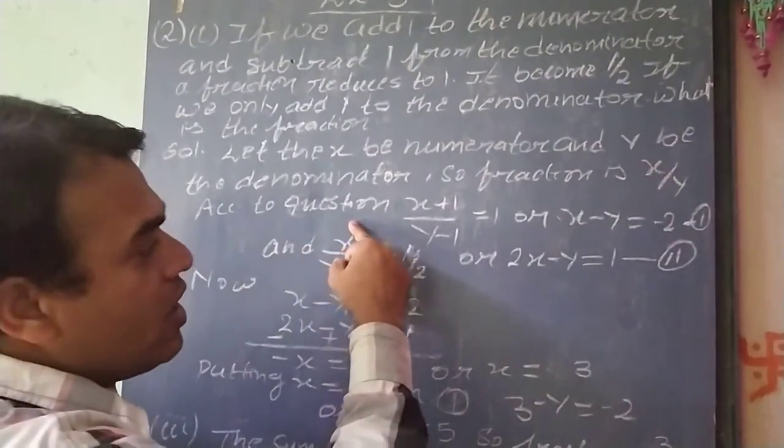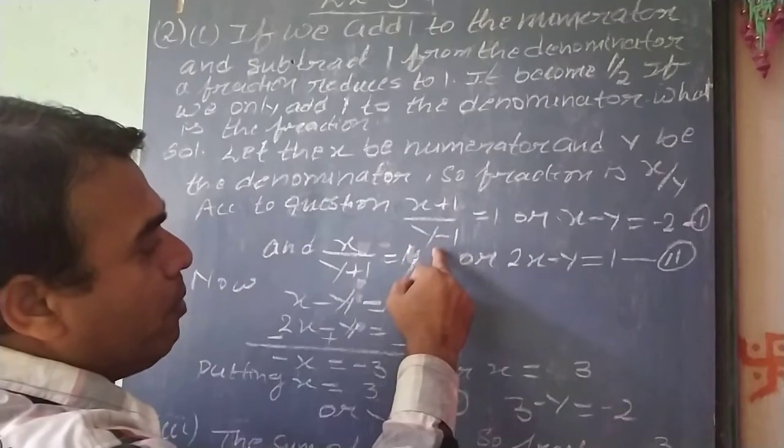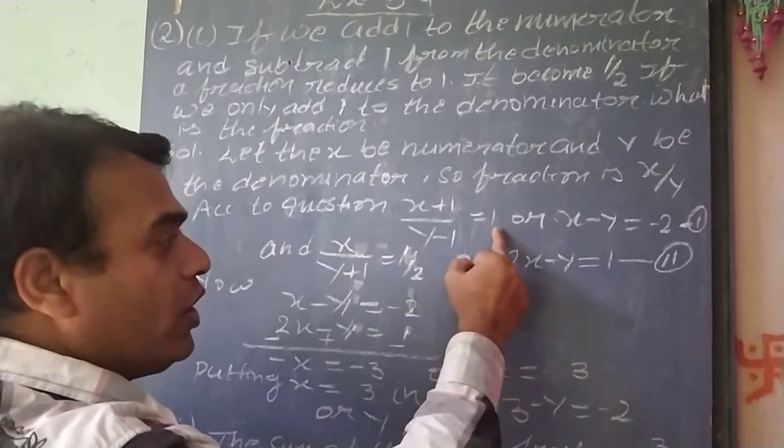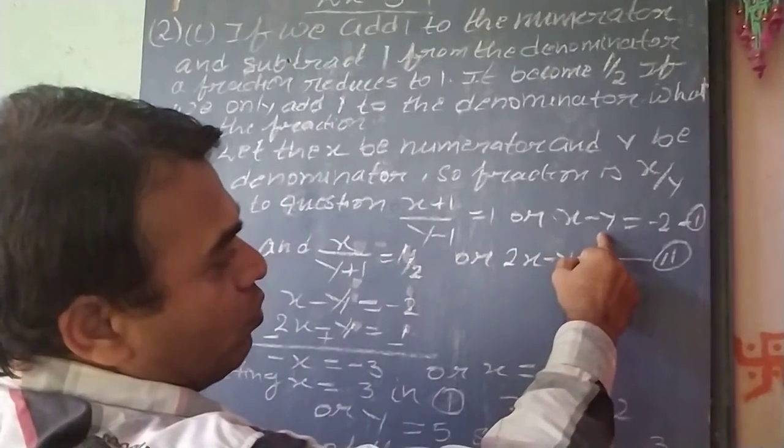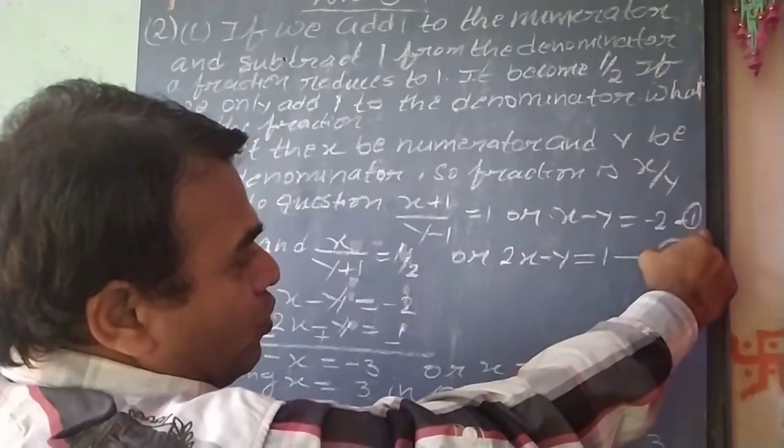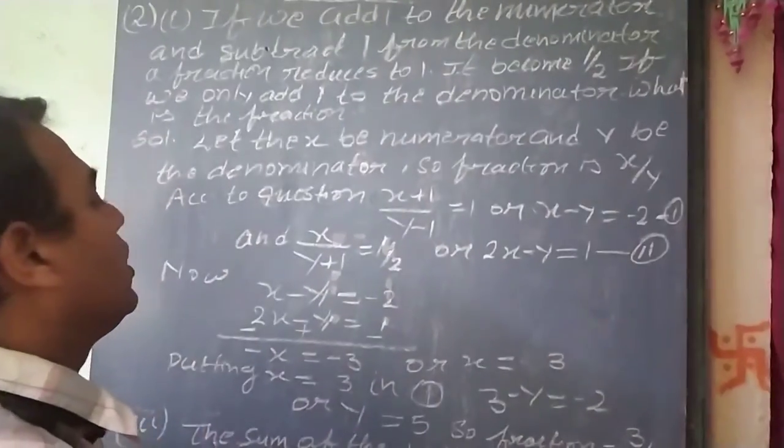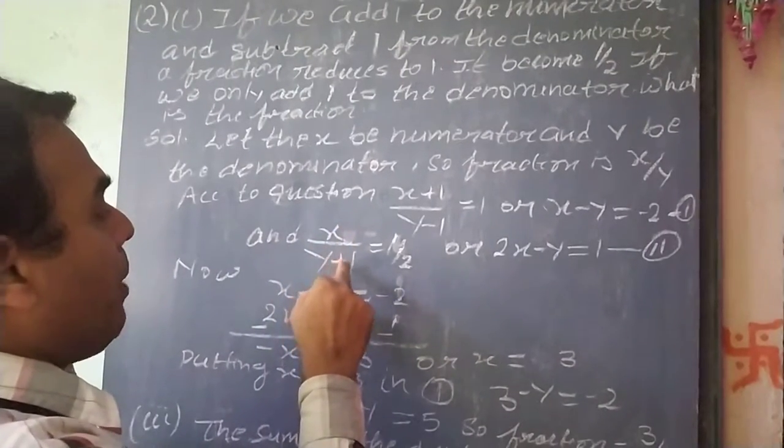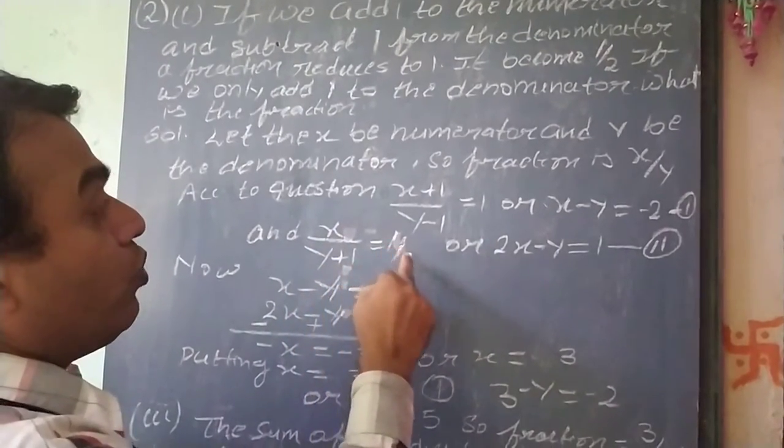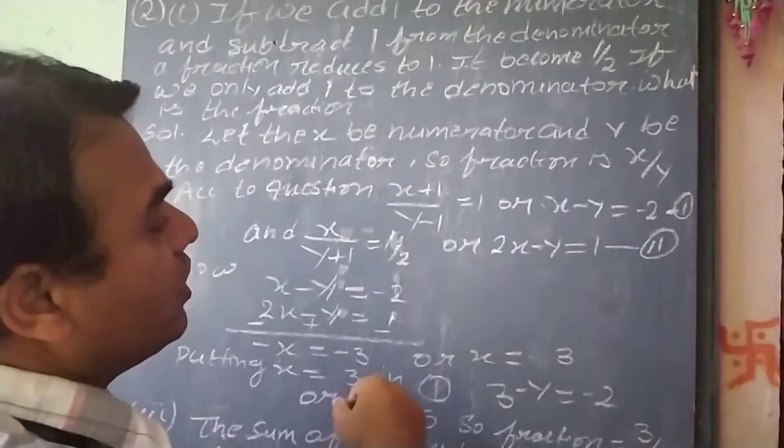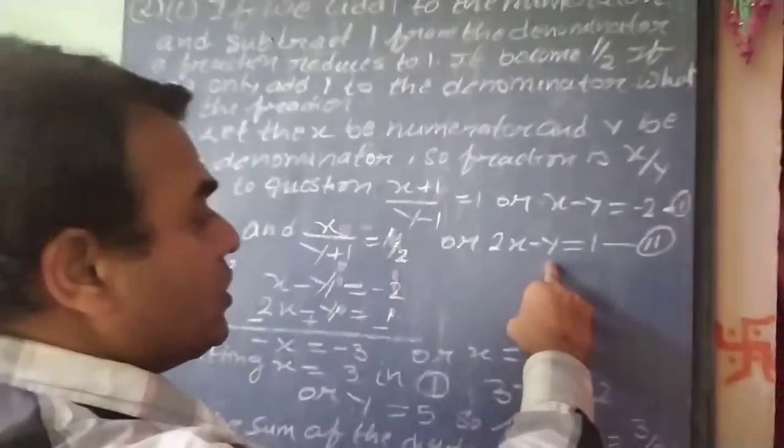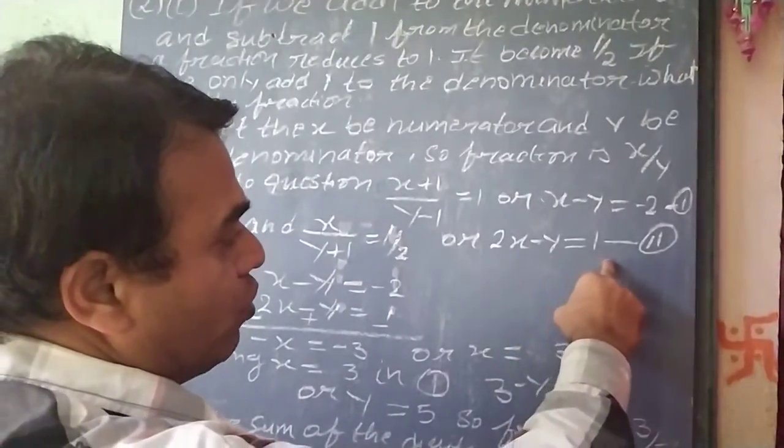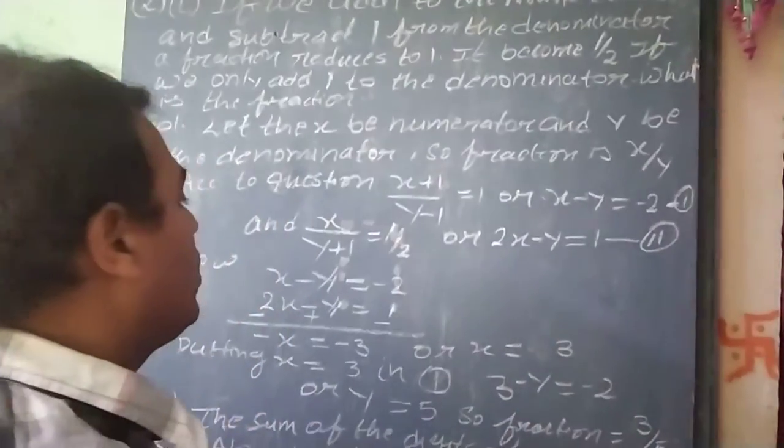According to question, x plus 1 by y minus 1 equal to 1 or x minus y equal to minus 2, equation number 1. In second, the x by y plus 1 equal to 1 by 2, according to questions, or 2x minus y equal to 1, that is equation number 2.